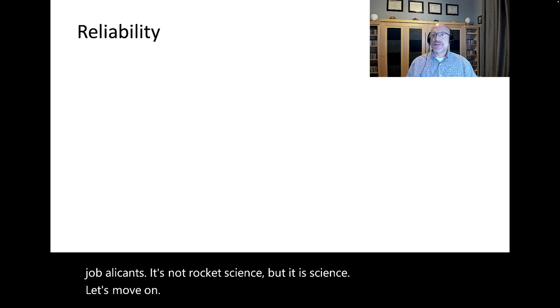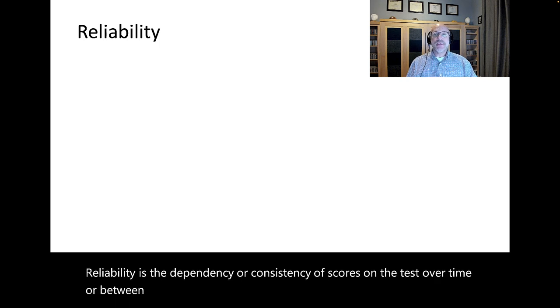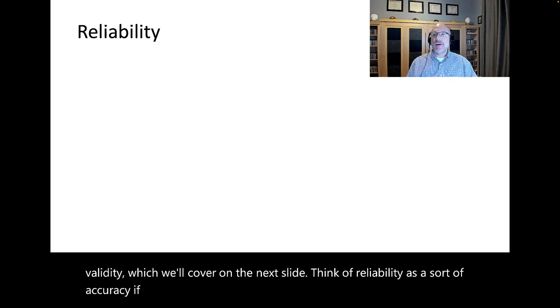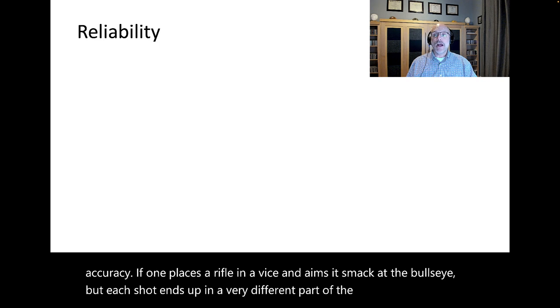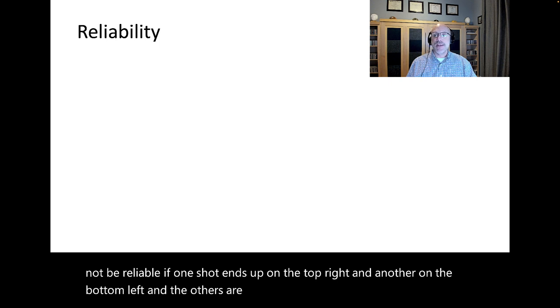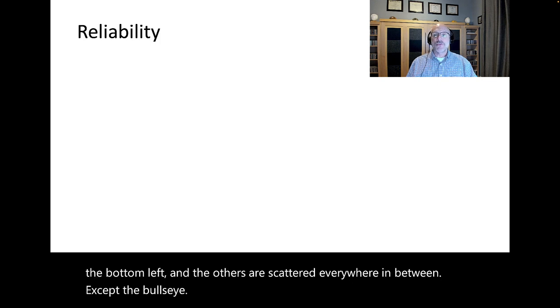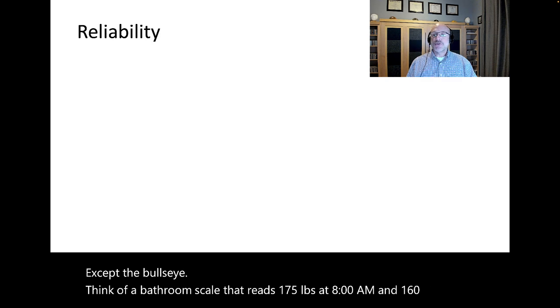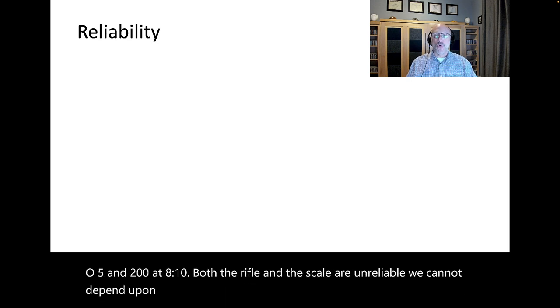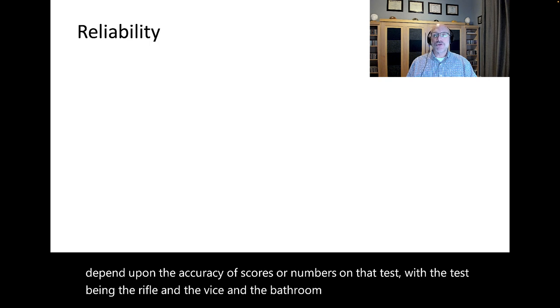Reliability is the dependency or consistency of scores on a test over time or between raters. Reliability is a necessary but not sufficient condition for validity. Think of reliability as a sort of accuracy. If one places a rifle in a vise and aims it smack at the bullseye, but each shot ends up in a very different part of the target, the rifle may not be reliable. Think of a bathroom scale that reads 175 pounds at 8 a.m., and 160 at 8.05, and 200 at 8.10. Both the rifle and the scale are unreliable.